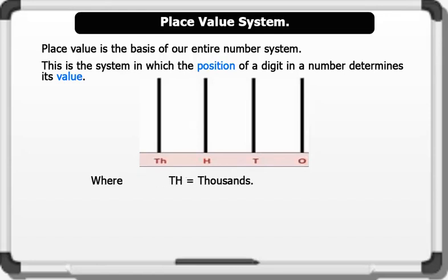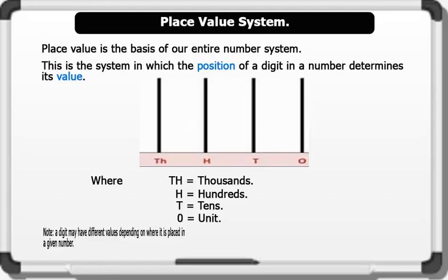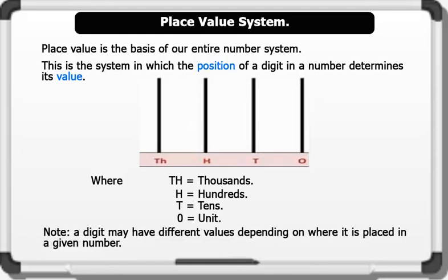Th represents thousands. H represents hundreds. T represents tens. And O represents units, or ones. Note that a digit may have different values depending on where it is placed in a given number. Now let's see an example using an abacus.